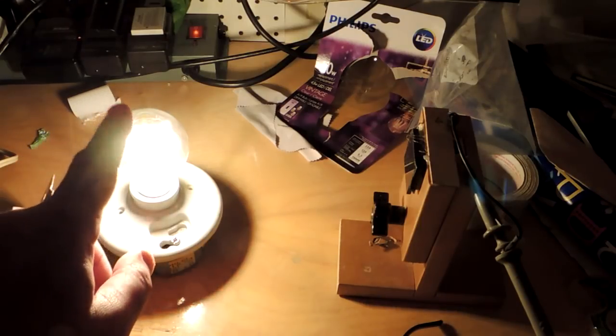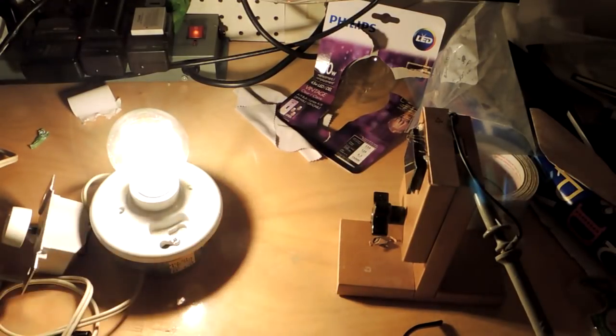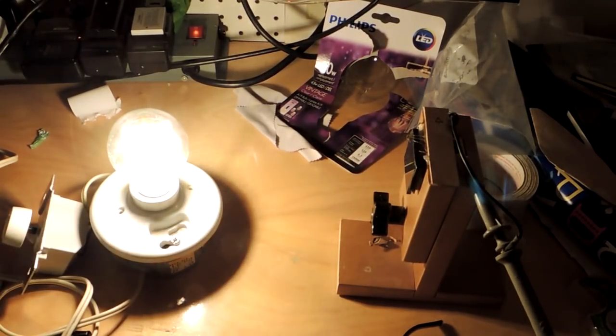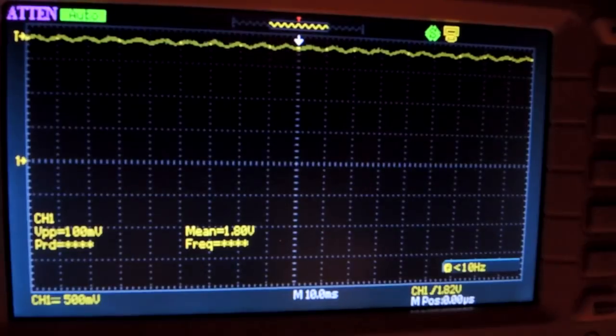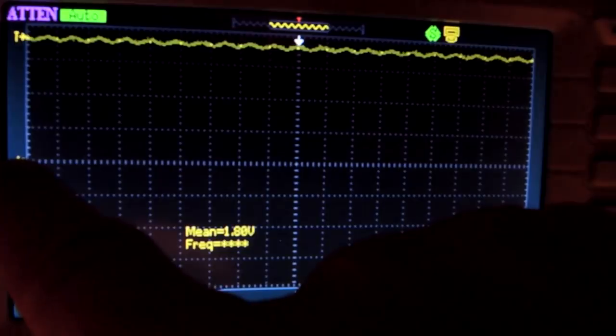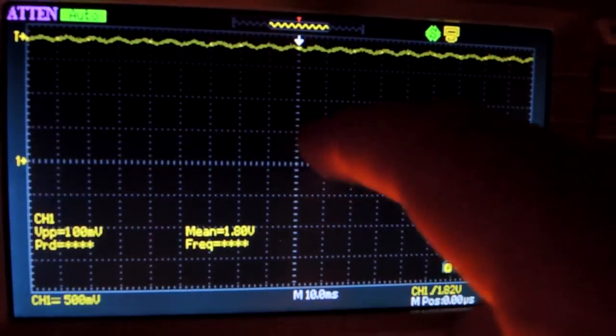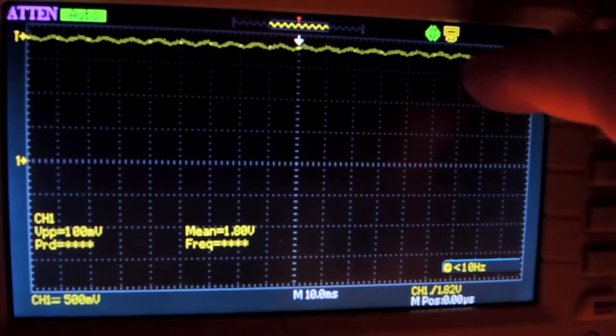So this is a flicker test light bulb shining upon a solar cell, which of course generates electricity. And let's just reposition the camera here. And we take a look at the output in the oscilloscope. So this is the output of the solar cell. It's DC coupled. And here's the ground here. And you can see a little bit of a waveform here.